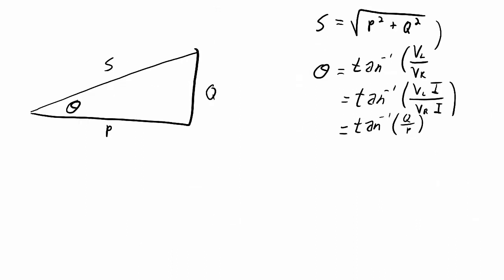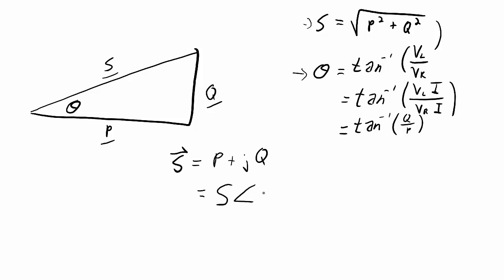Ultimately, this shows us the relationship between real power, reactive power, and apparent power. The apparent power can be represented as a vector. From the power triangle, that vector equals the real part of the power plus the imaginary part — written in rectangular form — but it can also be written in polar coordinates as S at a phase angle of theta, where S = √(P² + Q²) and theta = arctan(Q/P).